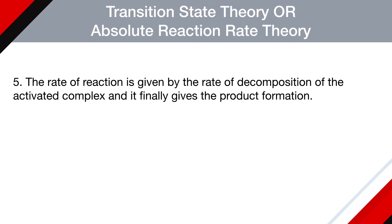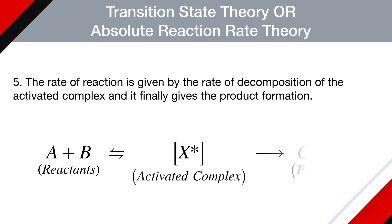Reactant A combines with B producing X*, an activated complex, which further decomposes to produce products C and D.